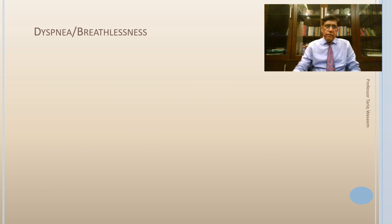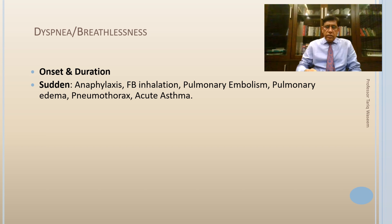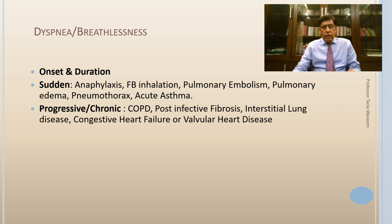Dyspnea — difficulty in breathing or breathlessness — has many adjectives used by patients. Ask how it started and for how long. Sudden onset usually points toward anaphylaxis, choking or foreign body inhalation, pulmonary embolus, acute MI, pneumothorax, or acute severe asthma. When dyspnea is progressive and chronic — present for weeks or days — think of COPD, post-infective fibrosis, ILD, heart failure, or valvular diseases.